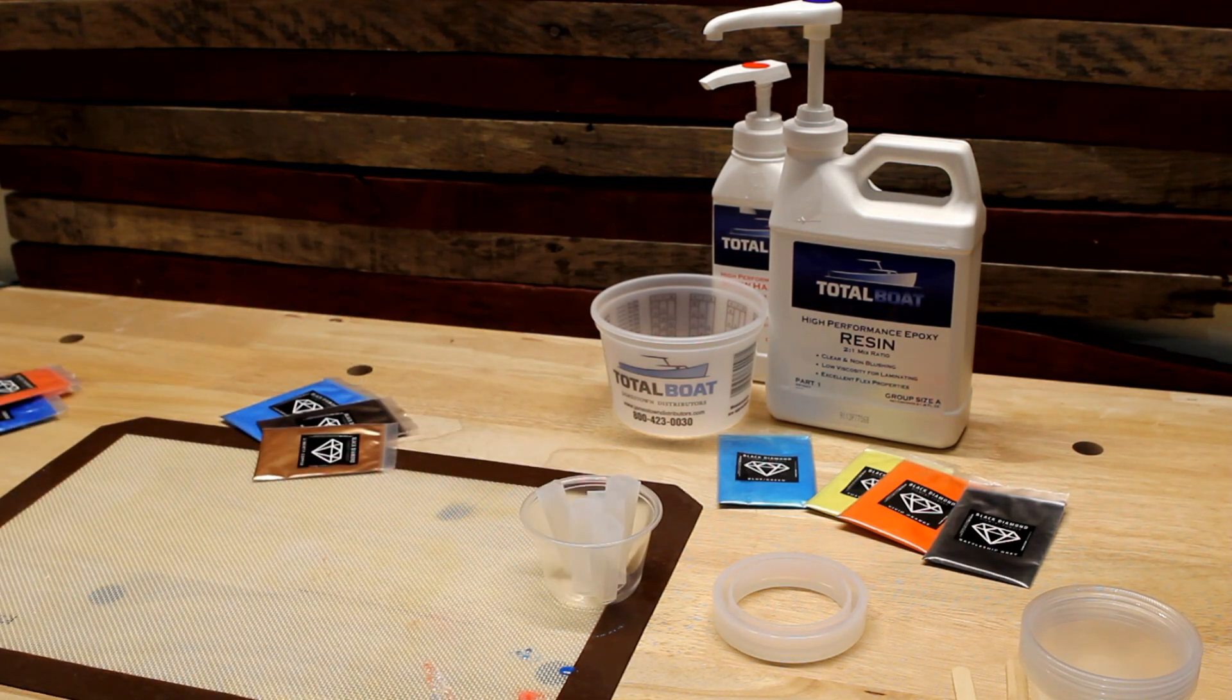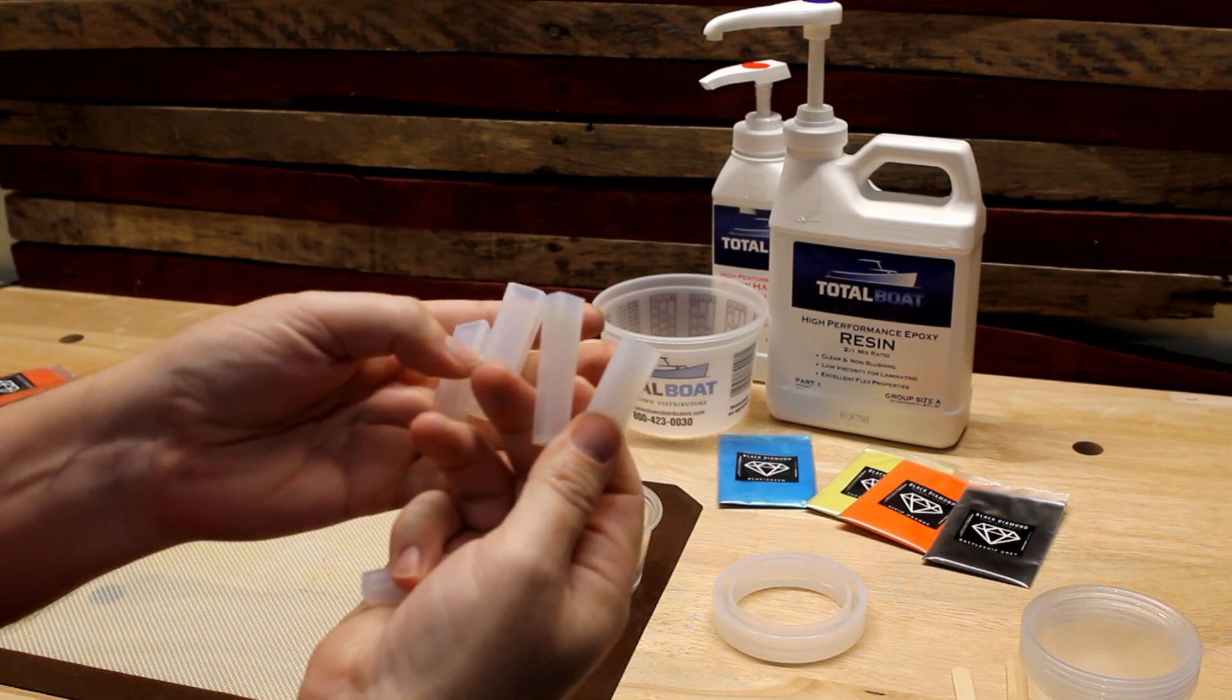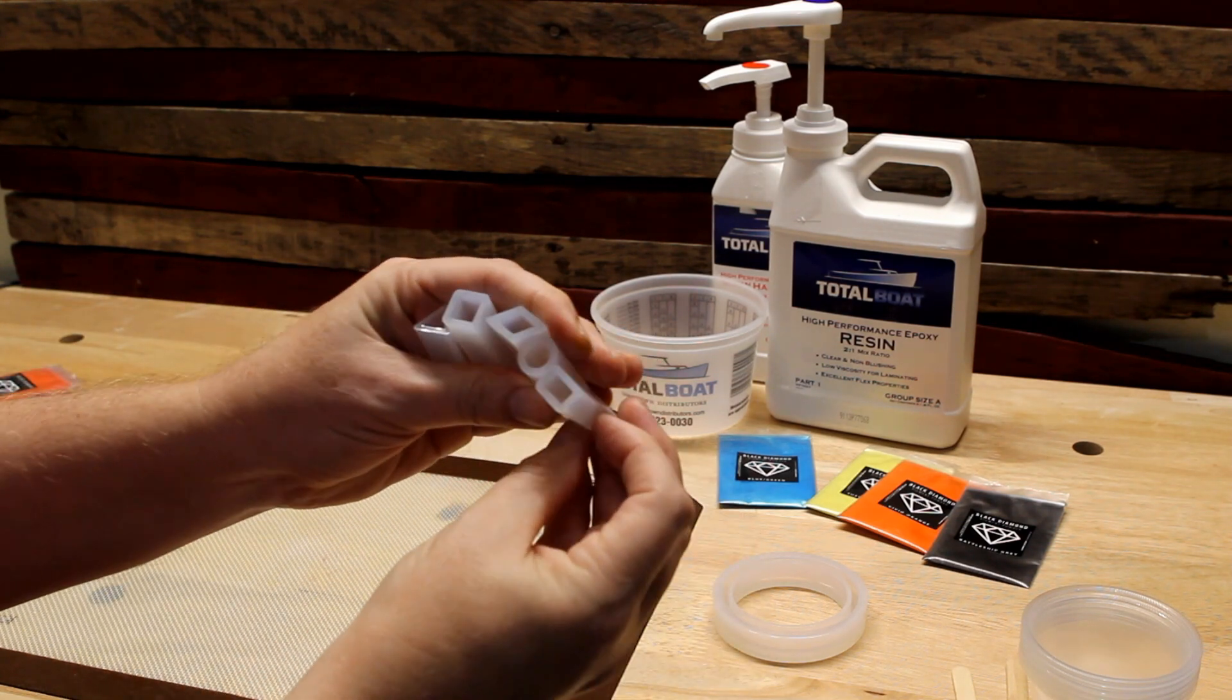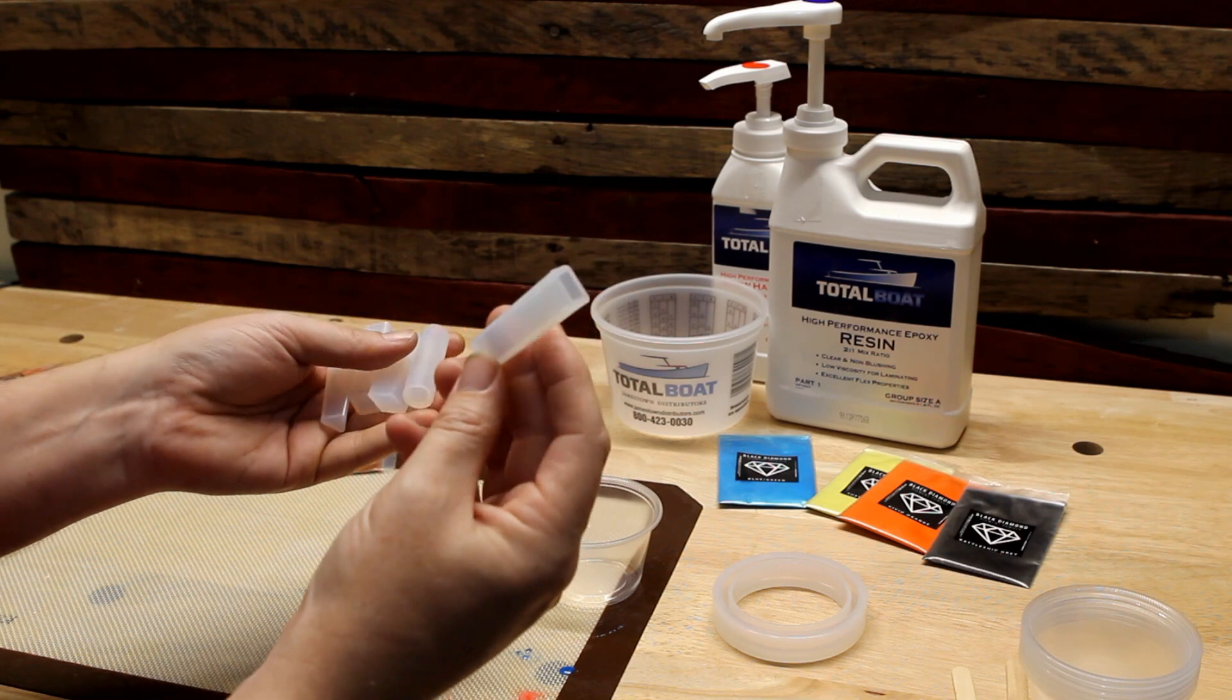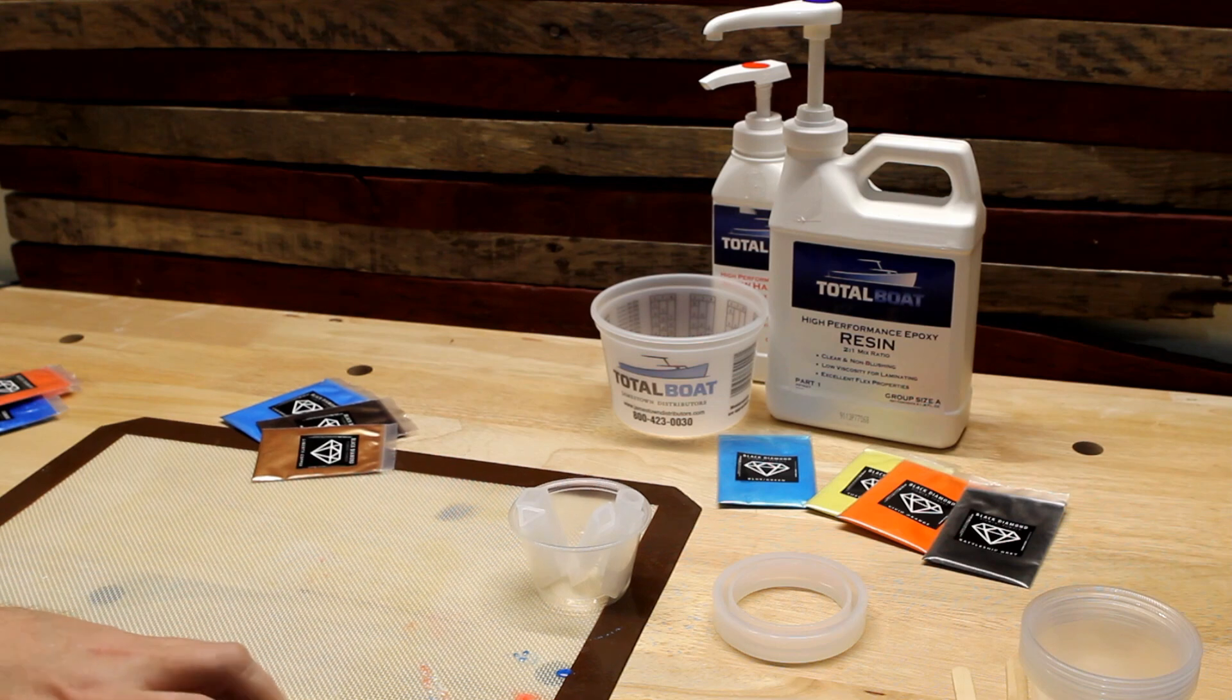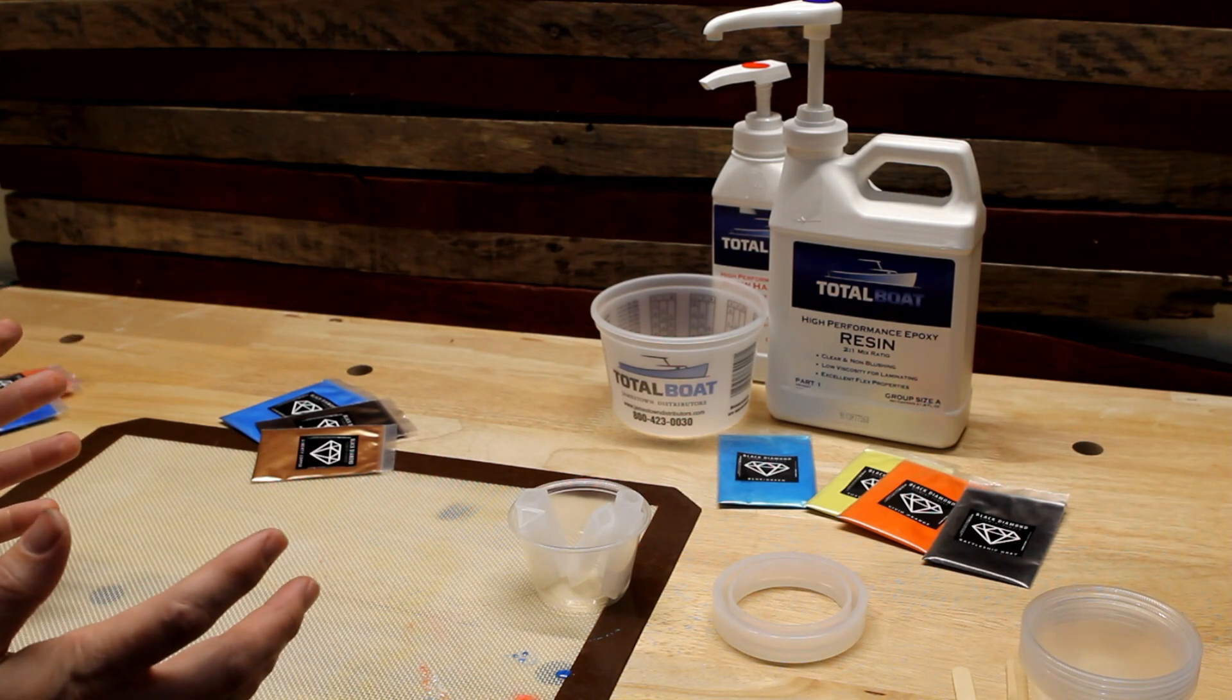The jewelry kit that's available at Total Boat comes with these little guys. They're tiny little pendant silicone molds and I'm going to use those today. I really should be using gloves because you should always use gloves when using epoxy, so I'm going to be a good influence.